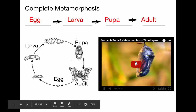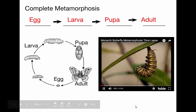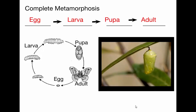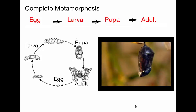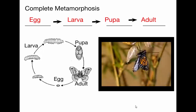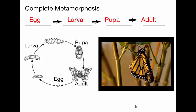In this time-lapse video, you can see metamorphosis: the caterpillar has stored up enough energy, attaches to a branch, forms the pupa stage, and inside it changes into the adult form of the butterfly. Eventually it emerges, ready to move on to the next stage of its life.